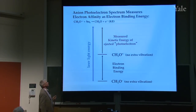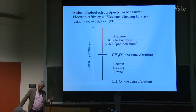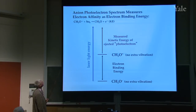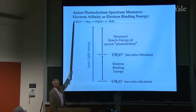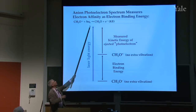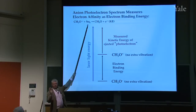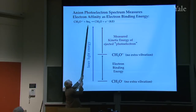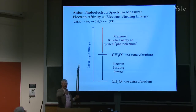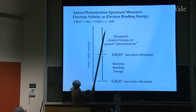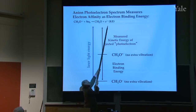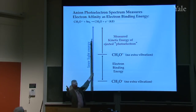This is an experiment done by Mark Johnson — Professor Mark Johnson at Yale University — and also by people in Boulder, Colorado. You literally take a vapor of these negative ions, make a fast beam, and cross this with a laser. I know the energy of the laser precisely. When the laser interacts with the negative ions, you'll eject electrons, and you catch them in a hemispherical analyzer. You literally measure the kinetic energy. If you know the energy going in and you know the energy coming out, the difference is the binding energy.